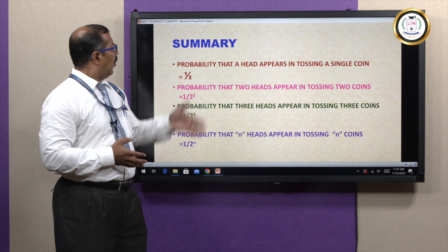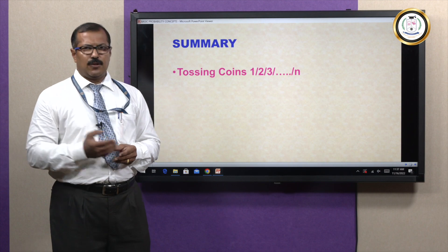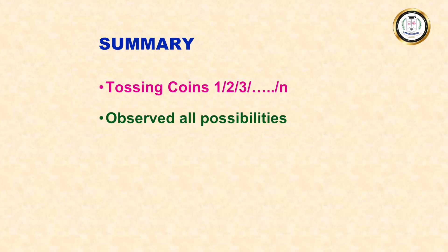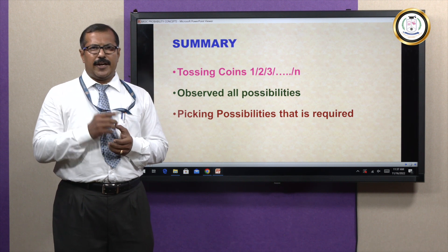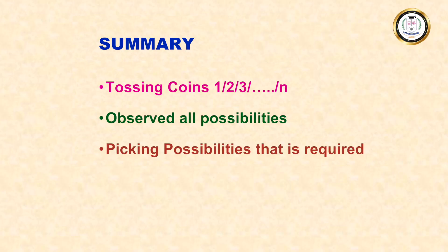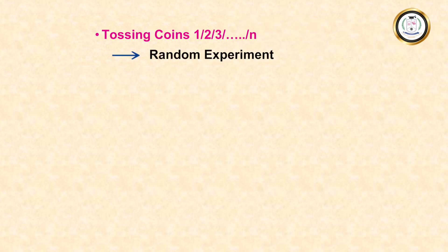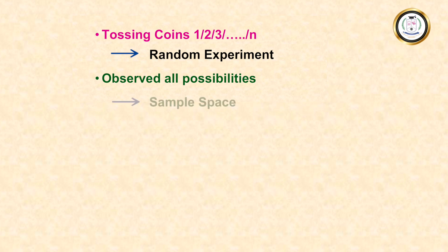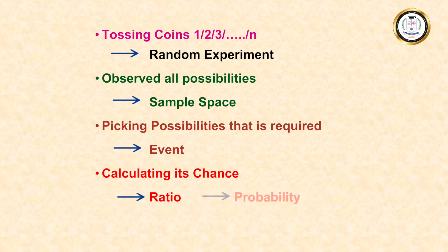Now let us see what we have done in all these examples. First, we are tossing a coin — either one, two, three, or n coins. Then we listed all possibilities in tossing that coin. Then we picked the possibilities required: in the first case, getting one head; in the second case, two heads; in the third case, three heads, and so on. Finally, we calculated the chance as a ratio. Tossing the coin is what we call an experiment. Listing all possibilities is called the sample space. Picking the possibilities that is required is called an event. And calculating its chance in the form of a ratio is represented by probability.